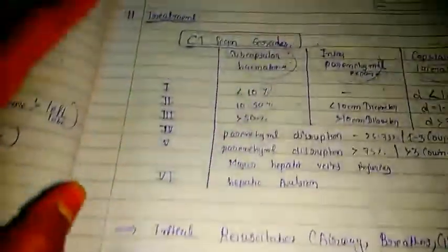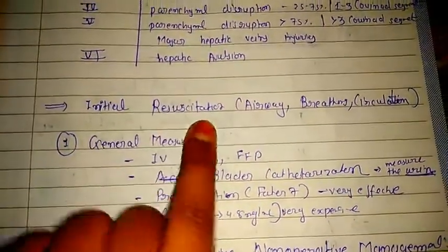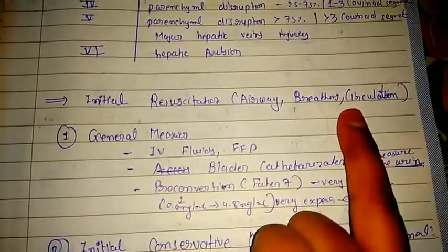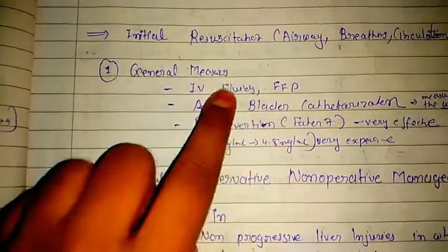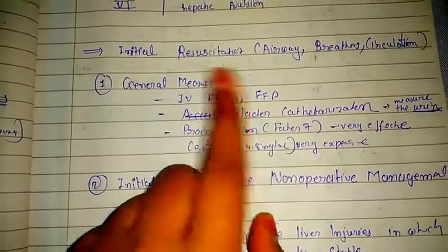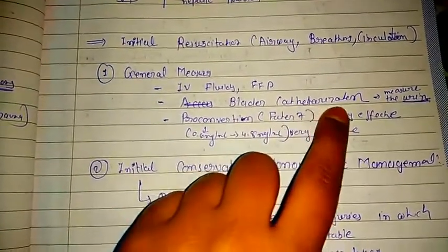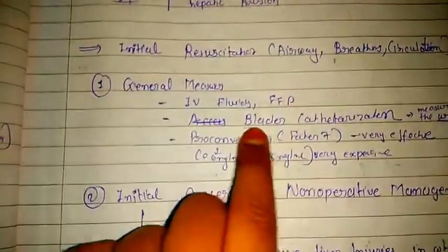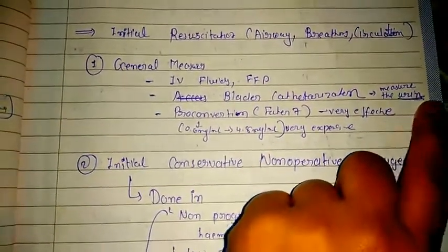In the treatment, first initial resuscitation is performed. In resuscitation, we check airway, breathing, and circulation first. Then general measures: IV fluids and fresh frozen plasma can be given. Bladder catheterization is also done because oliguria is a clinical feature, so catheterization helps measure the amount of urine output.